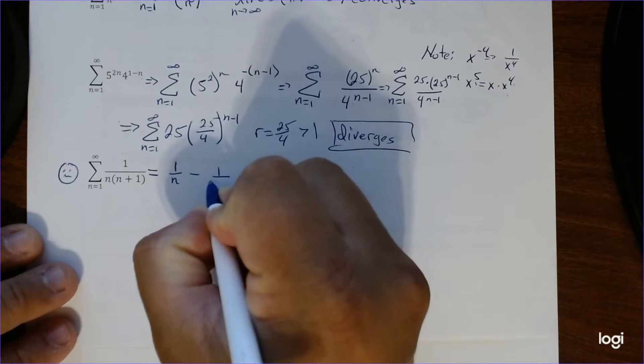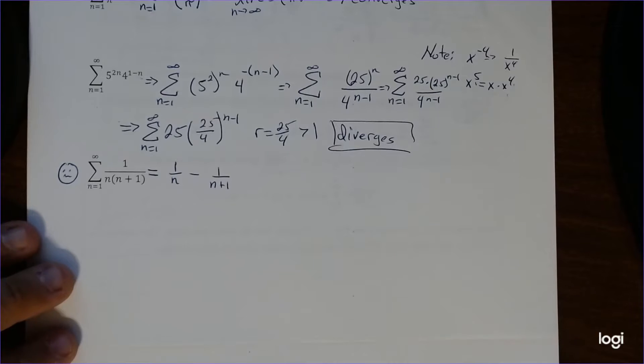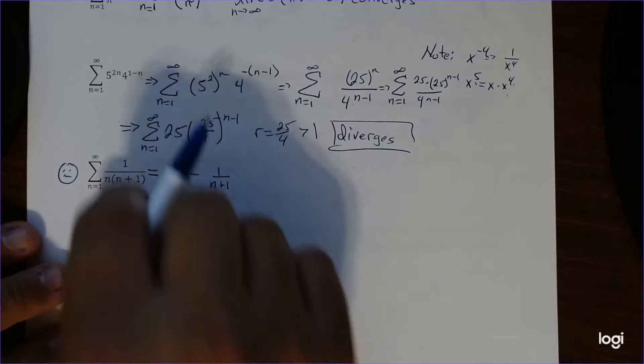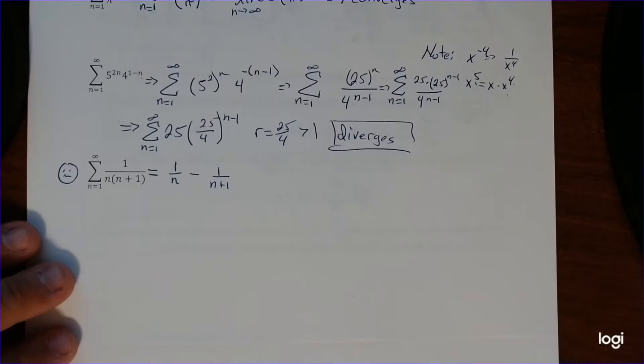n minus 1 over n plus 1. I'm just breaking up the fractions. So we're just breaking up. This is like partial fractions, just breaking it up.